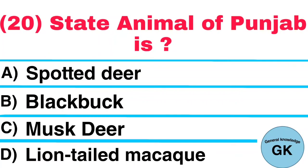Question Number 20. State Animal of Punjab is: A. Spotted Deer, B. Black Buck, C. Musk Deer, D. Lion-Tailed Macaque. Answer: Black Buck.